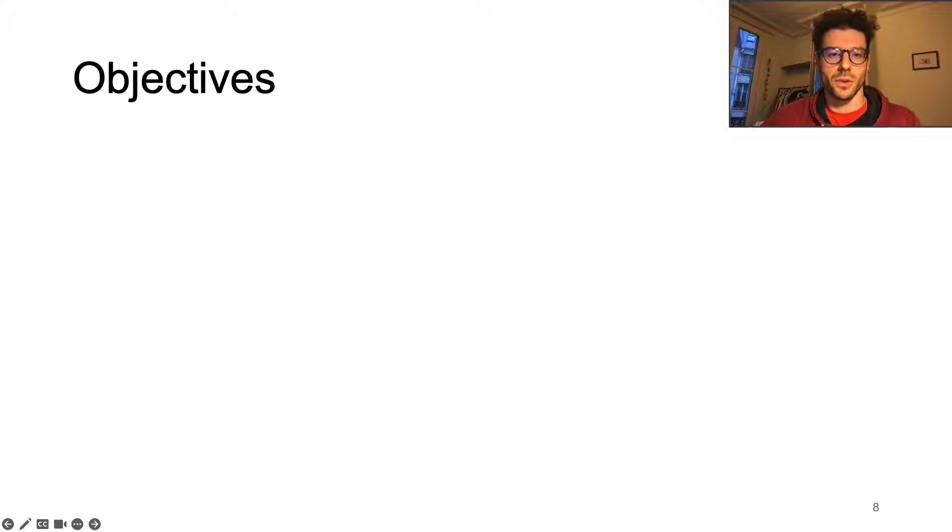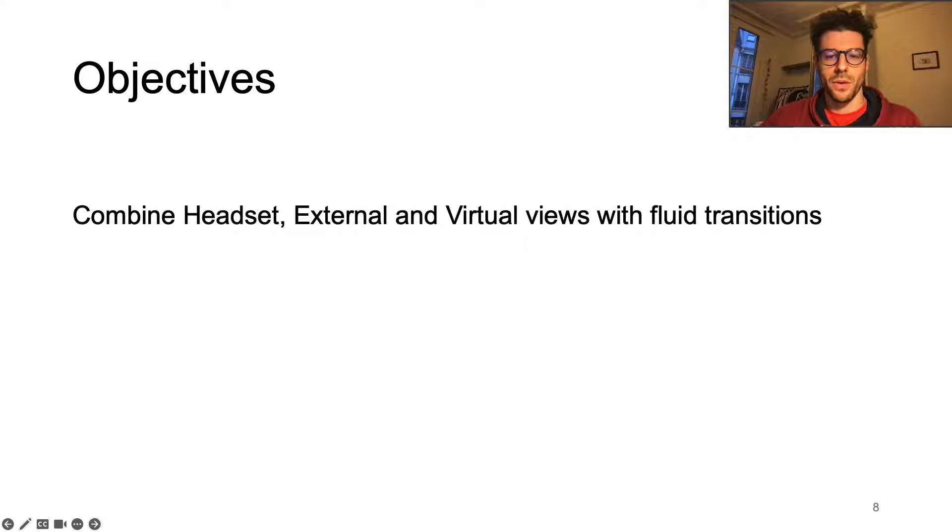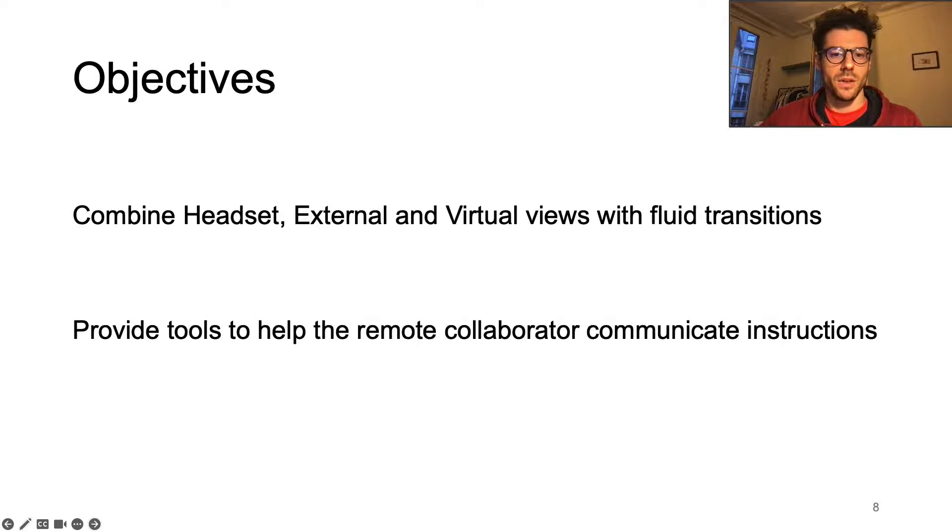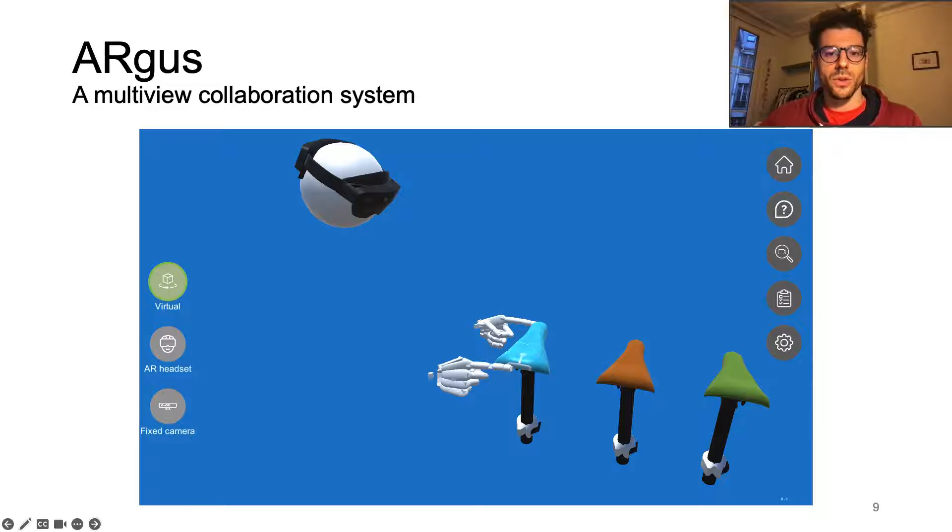Based on these results and users' feedback, we then consider two design goals. First, combine the three previous views while providing fluid transition between them. And secondly, provide tools that minimize communication effort and facilitate coordination. To answer this course, we designed a multiple remote collaboration system called Argus.